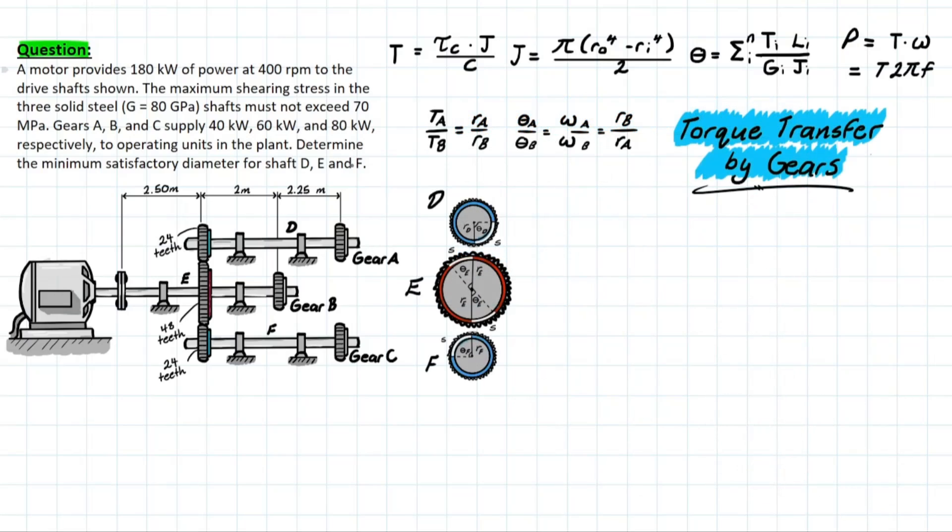Now let's hop into the problem. We got our relationships at the top, we got a sketch to help us solve this problem. The problem is as follows: We have a motor providing 180 kilowatts of power at 400 RPM, and it's providing it to the driveshaft shown. The maximum shearing stress in the three solid steel shafts must not exceed 70 MPa. It's giving us the shearing modulus of 80 GPa. Gears A, B, and C supply 40 kilowatts, 60 kilowatts, and 80 kilowatts, respectively, to operating units in the plant. You'll notice that these each add up to the total power generated by the original motor. And it wants us to determine the minimum satisfactory diameter for shafts D, E, and F.